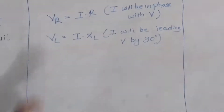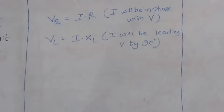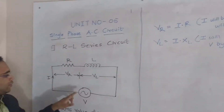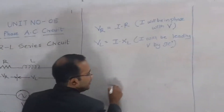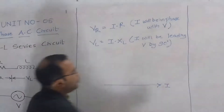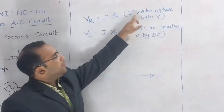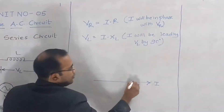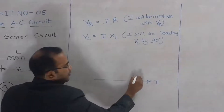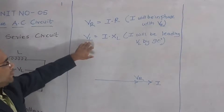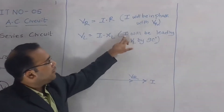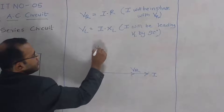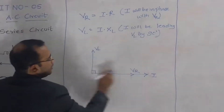Based upon these two conclusions we can draw the phasor diagram. The current I is a common factor, so with respect to current I we are going to draw the nature of voltage VR and voltage VL. I will take the reference as current I. According to the first statement, VR will be in phase with I. The second equation is VL equals I into XL, so VL will be leading current I by 90 degrees.